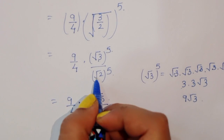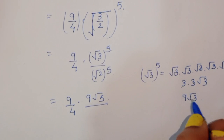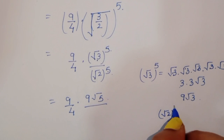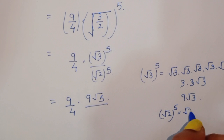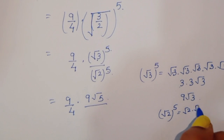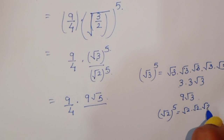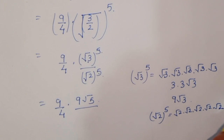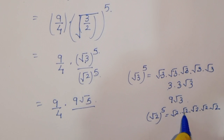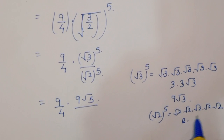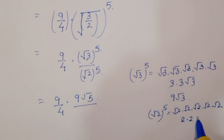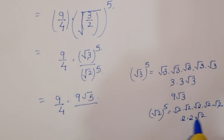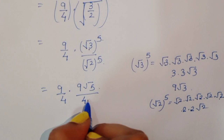Now for the denominator: square root of 2 power 5 equals square root of 2 multiplied 5 times: √2 · √2 · √2 · √2 · √2. Pairing them similarly gives us 4√2.